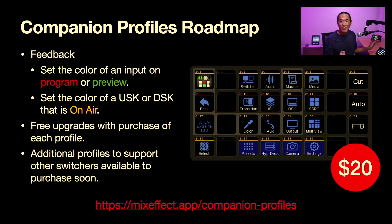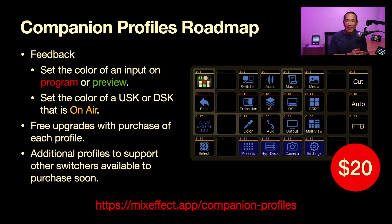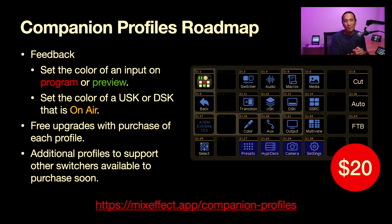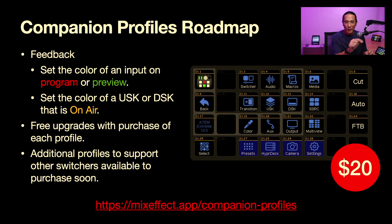So that's basically a quick overview of the companion profile I've created — again it's $20. You can download and purchase it at mixeffect.app/companion-profiles. Upgrades to this particular profile will be free, so when we add feedback I'll update the profile. There are 73 pages, so you'll want to export your current companion configuration profile before importing the new one. Make sure you save and rearrange your other pages — I'm using pages 21 to 93, and page one has a button that jumps you to page 21.